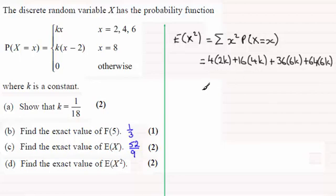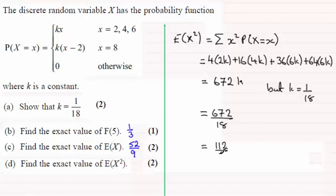And if we work this out, you end up with a total of 672k. But from part A we know that k equals 1/18. And so therefore this is going to equal 672 divided by 18. And working that out, it comes out exactly at 112/3, or 112 thirds.